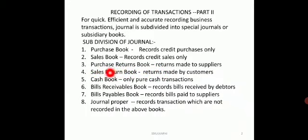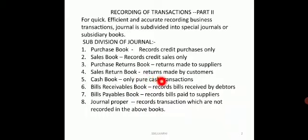So we have purchase returns and sales returns. Next is the cash book. The cash book records only those transactions where we are paying cash or receiving cash immediately on purchase or sale, or any amount spent in cash to meet day-to-day expenses, or incomes received that day.